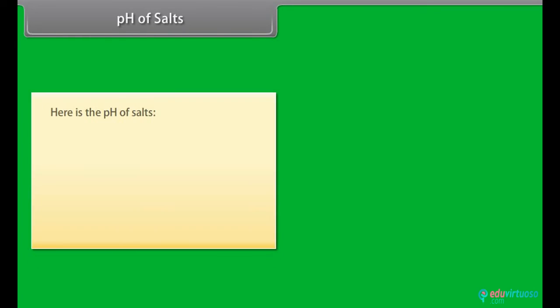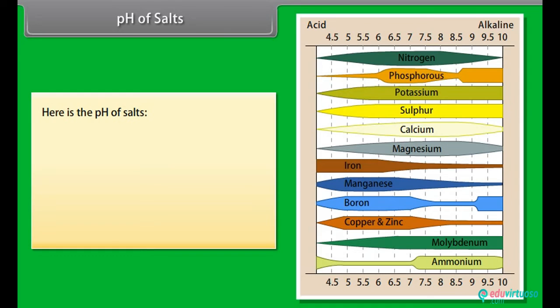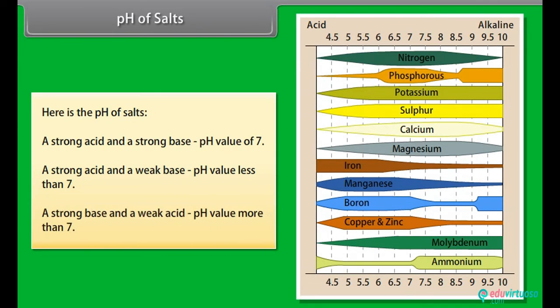pH of salts. Here is the pH of salts. A strong acid and a strong base pH value of 7. A strong acid and a weak base pH value less than 7. A strong base and a weak acid pH value more than 7.